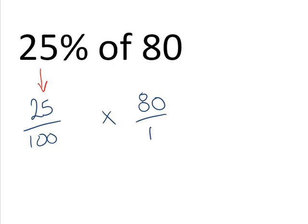And eighty becomes eighty over one. So, you end up with twenty-five over a hundred times eighty over one. Multiplying these out, twenty-five times eighty is two thousand. A hundred times one is one hundred.